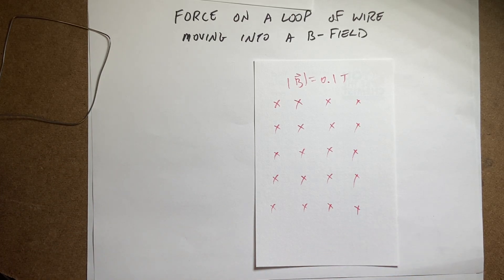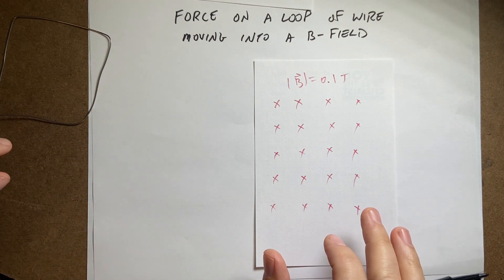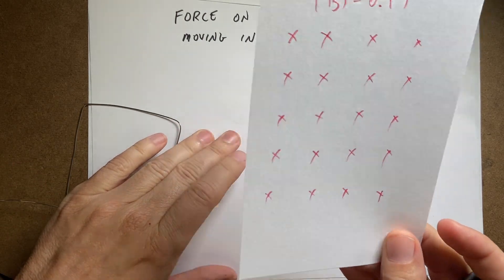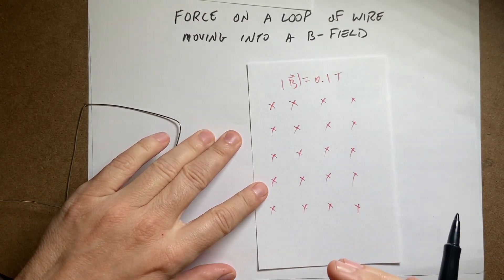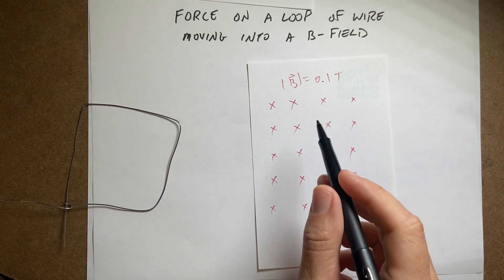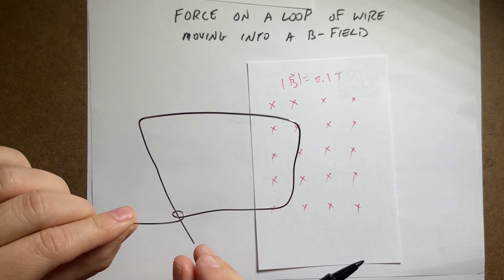Okay, I'm going to admit that this is a fairly complicated problem, but let me explain the problem to you and then we can solve it. So here I have represented a magnetic field. See that? It looks just like a magnetic field, right? So these X's represent a magnetic field going into the paper with the magnitude of 0.1 tesla. I just totally made that up.